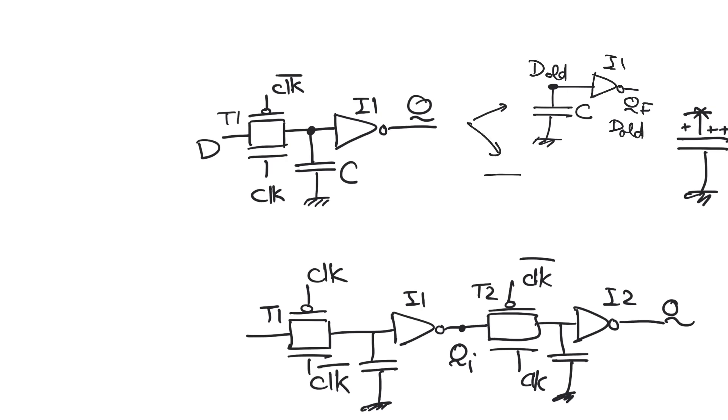So when we are transparent the value of Q is equal to D bar and when we are opaque the value of Q is equal to D old bar. So this is a latch that passes the value when clock is equal to one and stores when clock is equal to zero. This is an active high latch.